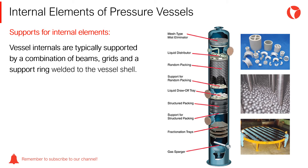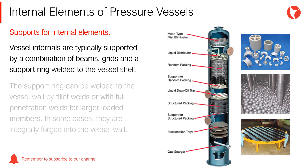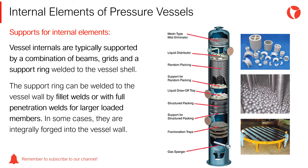Vessel internals are typically supported by a combination of beams, grids and a support ring welded to the vessel shell. The support ring supports the periphery of the grating or tray plates. The support ring can be welded to the vessel wall by fillet welds or with full penetration welds for larger loaded members. In some cases, they are integrally forged into the vessel wall.